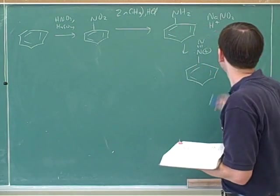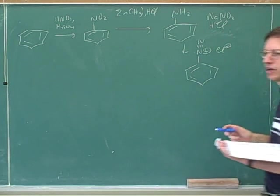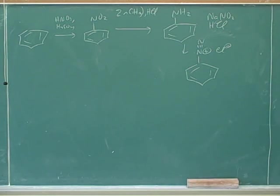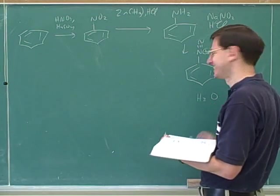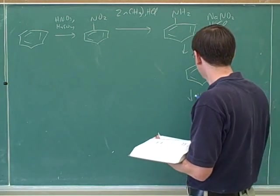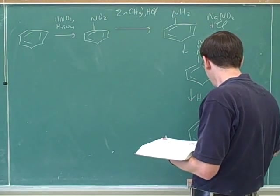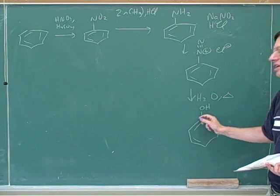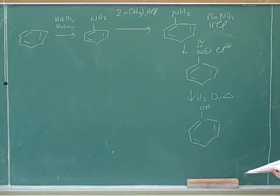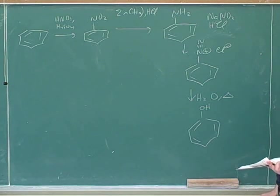That gives us the diazonium salt — we were using hydrochloric acid last time to get the diazonium salt. And then H2O with heat. The purpose of the heat is to encourage the leaving group to leave, and then the water can come in and replace it. Now that's kind of long, but that's the synthesis you're expected to know. That's one good synthesis for making phenol.